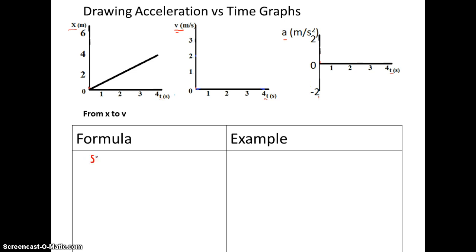Remember, slope is equal to rise over run. In this case, our rise from one point to another point is in this direction. So this is our change in x. Our run is in this direction. That's just our change in time.